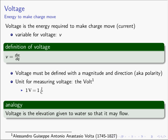Voltage is really the energy required to make charge move. Remember that energy is the cost to do something — if charges are moving, then we're doing something, therefore energy must be expended. The variable for voltage is V, and the definition of voltage is V equals DW over DQ. So voltage is a normalized energy: V equals DW over DQ means voltage is the energy per unit charge. Since voltage is an energy, we can measure how big that energy is, and we can be above or below something in energy, so voltage also has a direction.